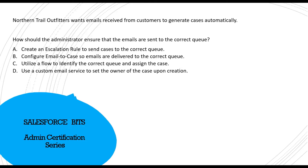Looking at option A: create an escalation rule to send cases to the correct queue. This statement is partially true — an escalation rule can send cases to the correct queue — but you cannot use an escalation rule to create cases from emails received from customers.